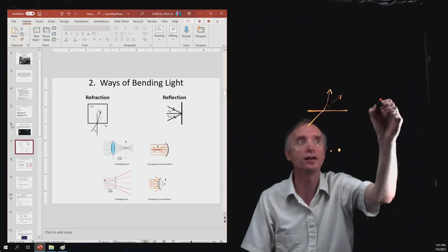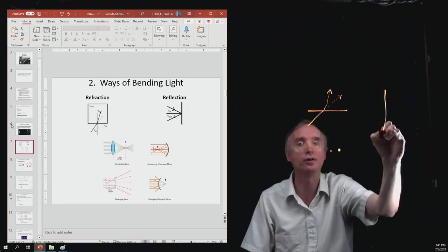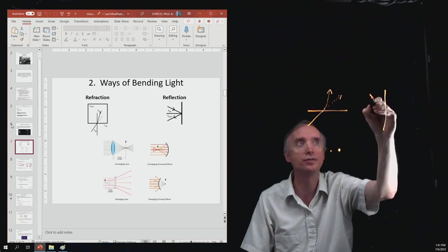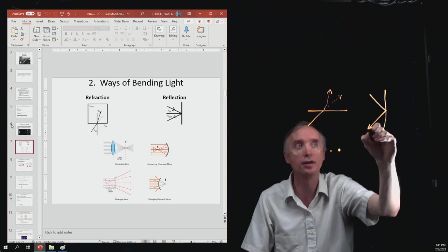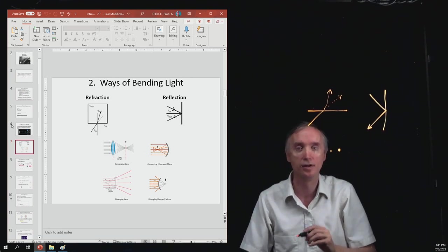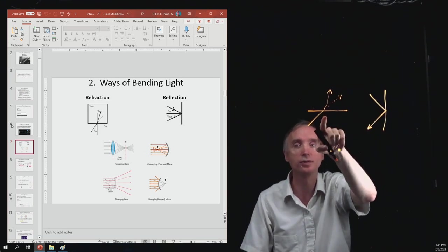Now on the other hand, reflection is over here. You've got light that's coming in, it's bouncing off of this mirror and it's going in that direction. So this is reflection. This one here is refraction.